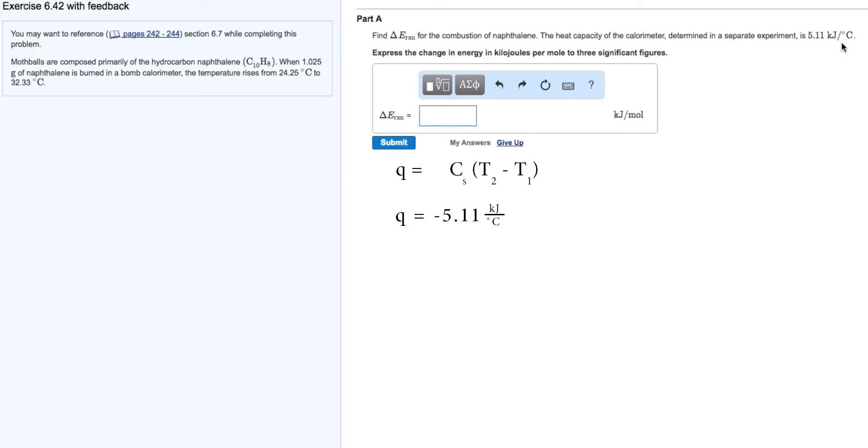It takes 5.11 kilojoules to raise the temperature of the calorimeter one degree. The temperature rose from 24.25 degrees centigrade to 32.33 degrees centigrade, so it went up 8.08 degrees.